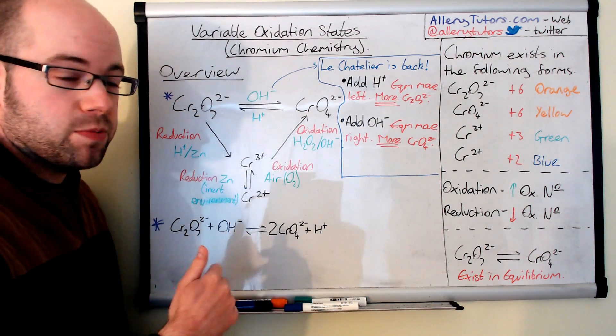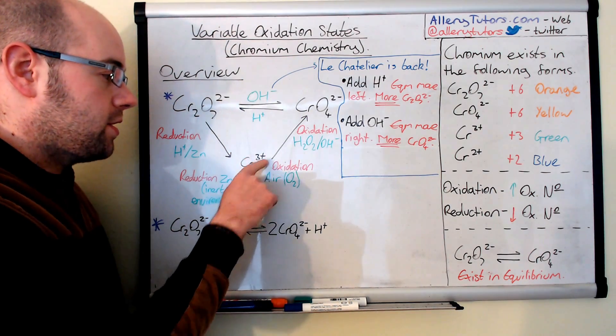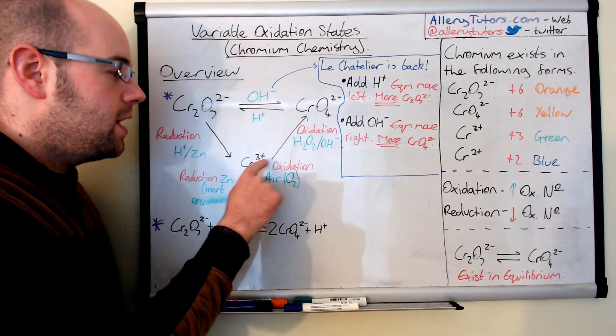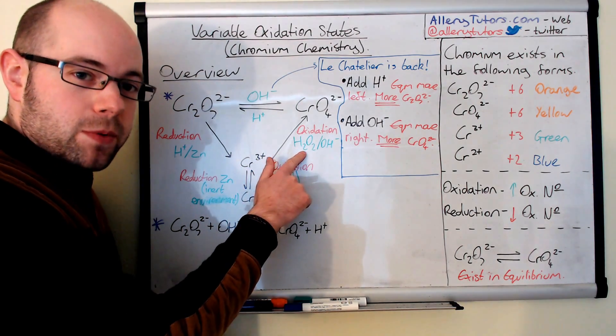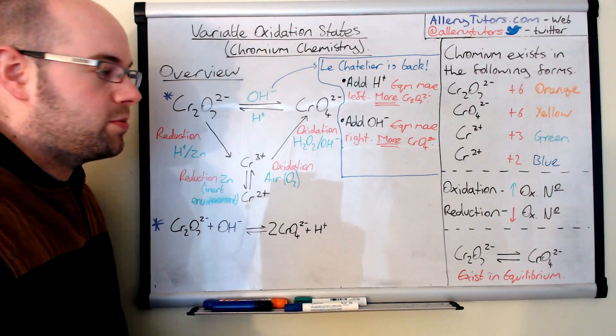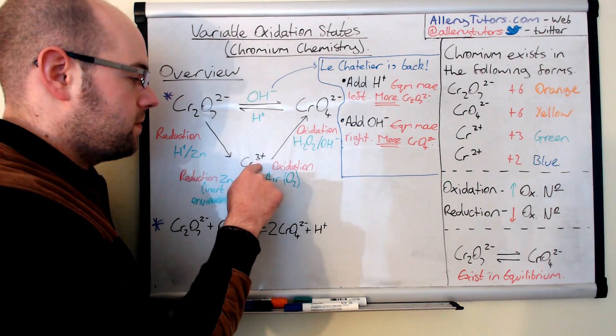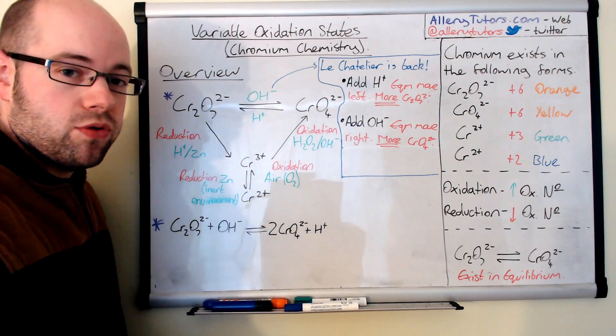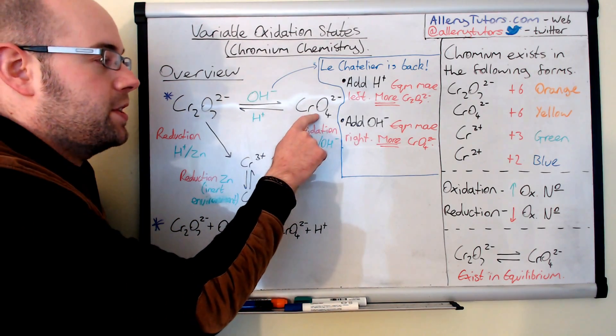So this is quite important, and obviously, we can go backwards as well. We can take the chromium 3+ and we can add hydrogen peroxide, which is a really strong oxidising agent, and some alkali as well, some OH⁻, and effectively, that will form the chromate ion, which is this one here, and that's yellow.